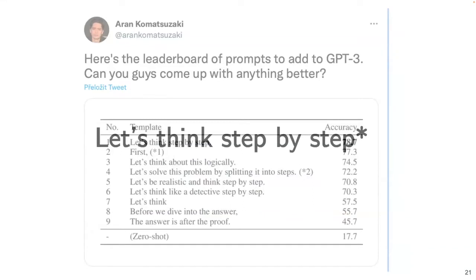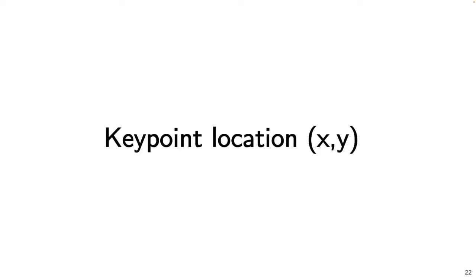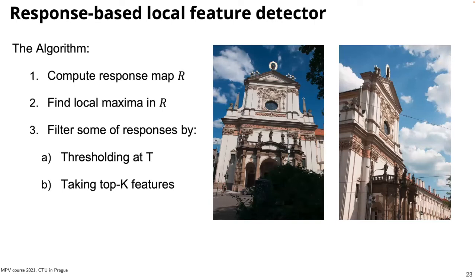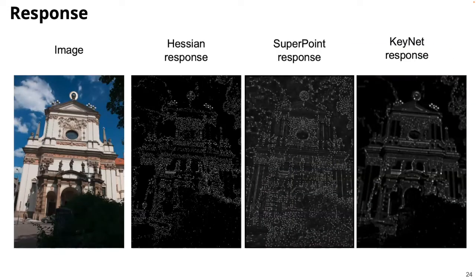Most detectors are response-based: we calculate some kind of response function over the image, find local maxima, and then take either top-k or apply a threshold. Both approaches have pros and cons. The key question is: what is the response function?